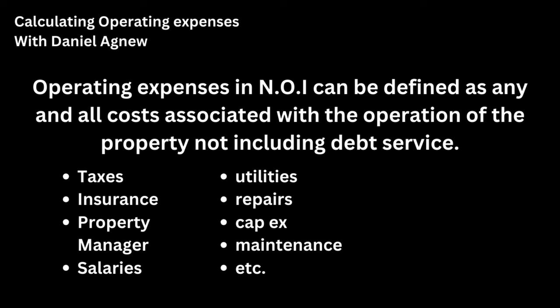Your operating expenses — an easy way to define them — are any and all costs associated with operating the piece of real estate or that property, excluding your debt service. That is the only thing left out. Things like taxes, insurance, management, salaries of employees, utilities, repairs, maintenance, CapEx, etc. are all operating expenses that you would calculate into your net operating income.